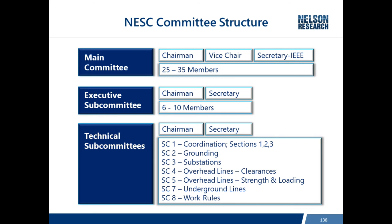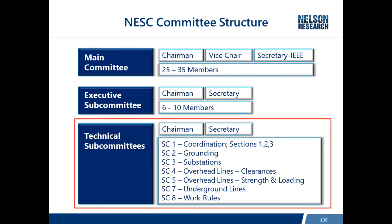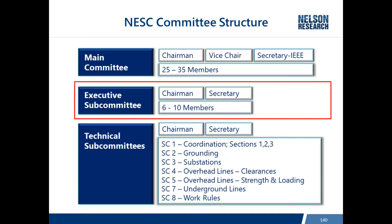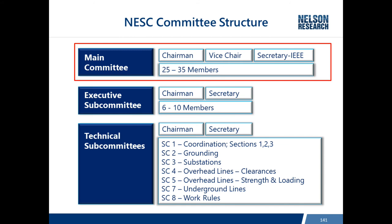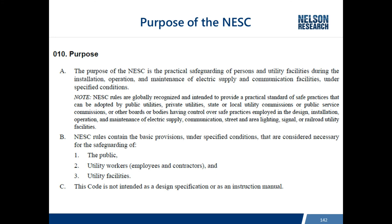This is the committee structure for the NESC: a main committee, executive subcommittee, and technical subcommittees. Most of the hands-on work is done at the technical subcommittee level. During the revision cycle, change proposals are distributed to the different subcommittees based on their topic, and they meet to take initial votes on changes. That is then published in a pre-print for public comment, and they reconvene to consider the comments and vote one more time.